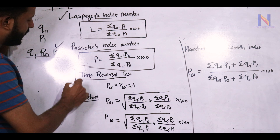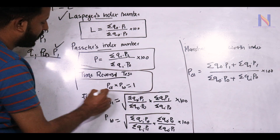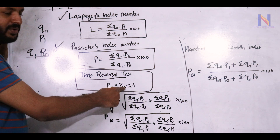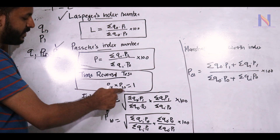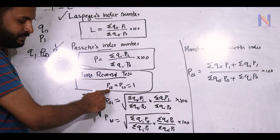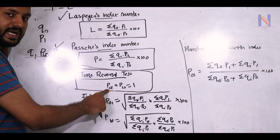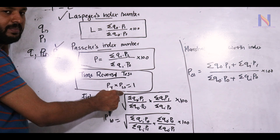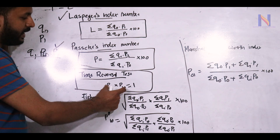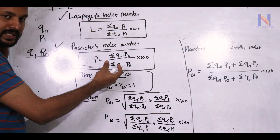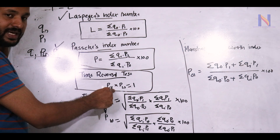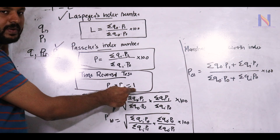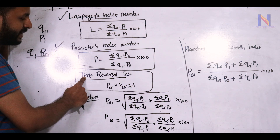Next is the important Time Reversal Test. We have P01 and P10. If we interchange the current year and base year, it means P10. Multiplying P01 × P10 gives the time reversal result, which should equal 1.